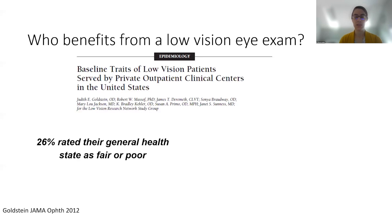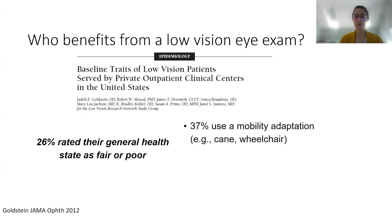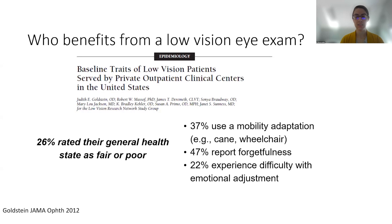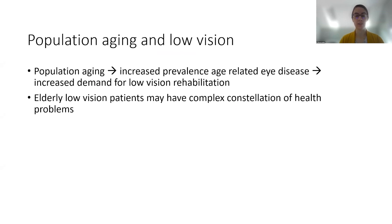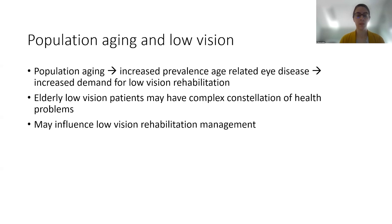In addition to impacted general health, 37% of patients in the study used a mobility adaptation like a cane or wheelchair, 47% reported forgetfulness, and 22% noted difficulty with emotional adjustment to vision loss. So many patients who present for low vision have other problems going on in addition. With our population aging, we're seeing elderly low vision patients who often have a complex constellation of health problems — multiple comorbidities — that can influence low vision rehabilitation management.